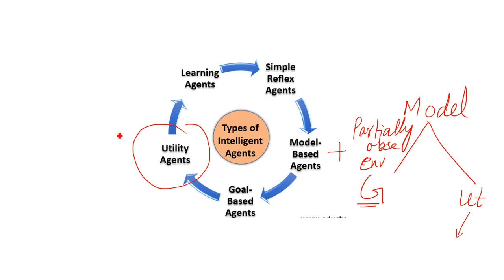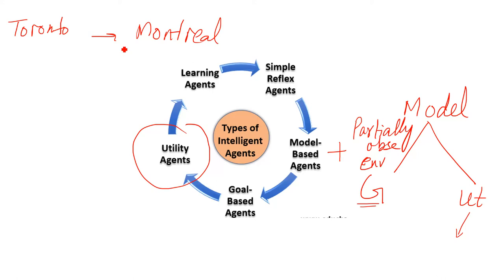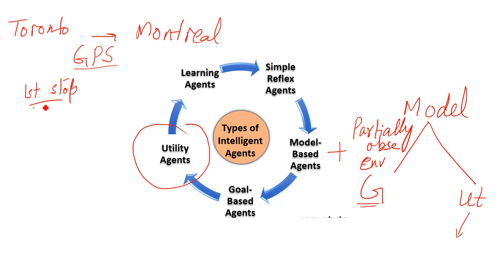Let me explain utility agents with an example first, then I will read from my next slide. Suppose you are going from Toronto to Montreal — we assume it takes four hours and we will make three stops. We give our destination to the GPS, which provides two or three different routes, and we will follow the shortest one. We start our journey, and after one hour we make our first stop.